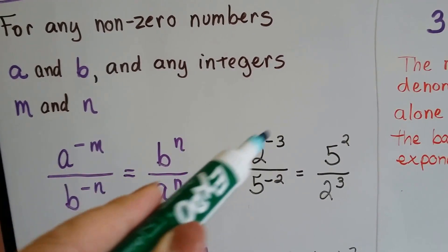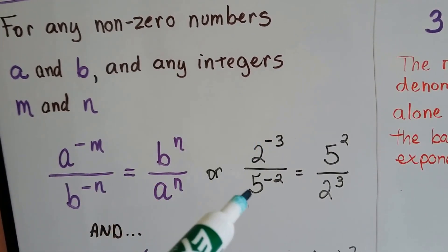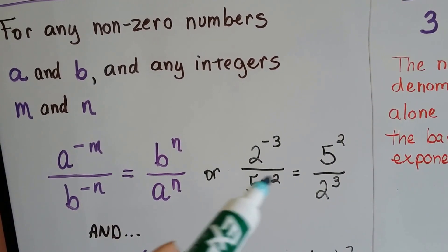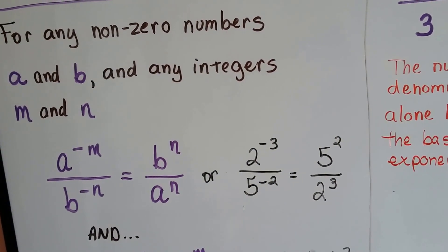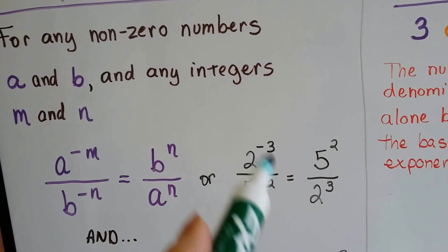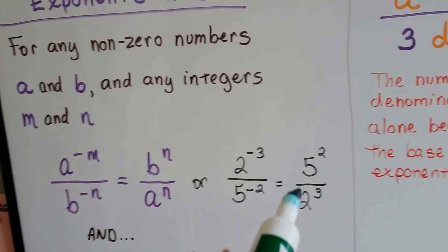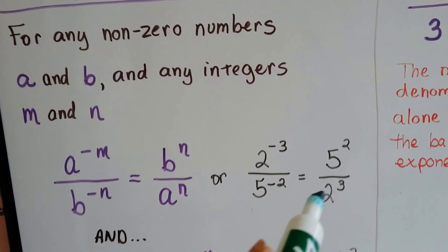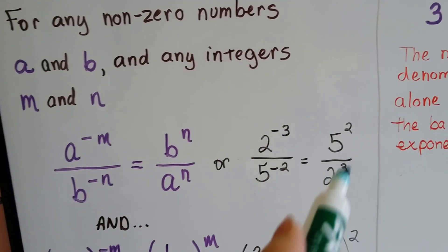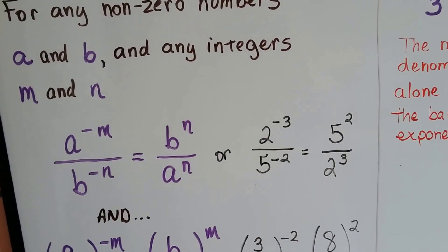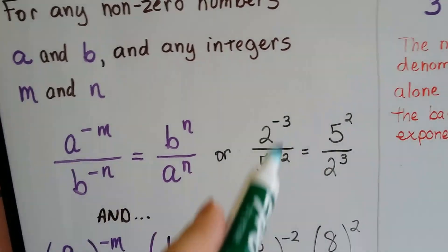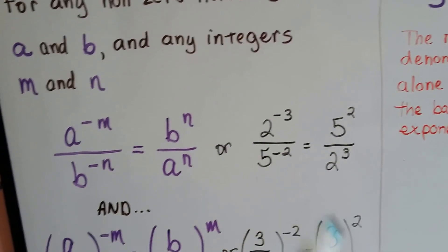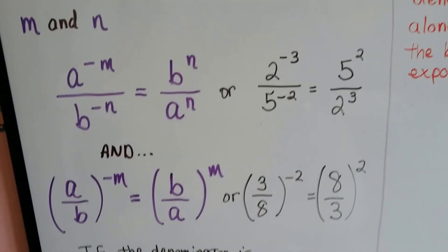If we have 2 to the negative third over 5 to the negative 2, we're going to flip it around to its reciprocal and get 5 to the positive 2 over 2 to the third. And the negative signs go away when we flip it around to its reciprocal.